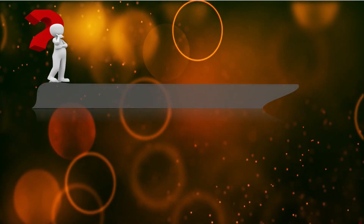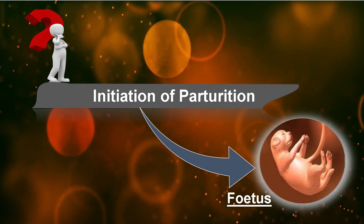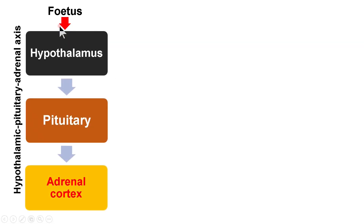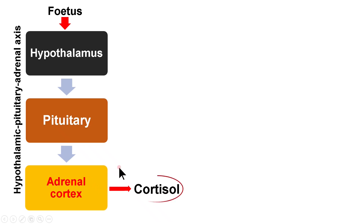The question is: who initiates parturition? The fetus itself decides the time of parturition — it is the mastermind. The mechanism begins with the fetal hypothalamus-pituitary-adrenal axis. These three tissues work in coordination: the hypothalamus releases a releasing factor, which acts on the pituitary, and then the pituitary releases ACTH (adrenocorticotrophic hormone), which acts upon the adrenal cortex.